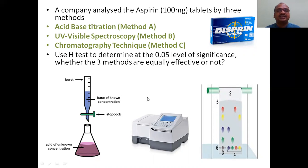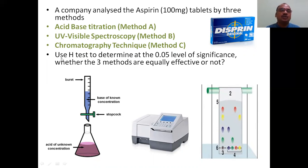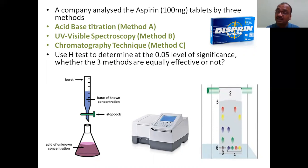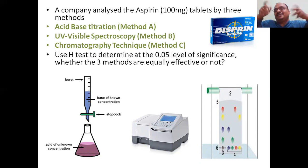Use the H test to determine at the 0.05 level of significance — that is the alpha level. If they are not given, by default it can be taken as 0.05. The question is whether the three methods are equally effective or not. The tablets are the same; the methods are different. Which method gives good results? Either the three are giving the same or different results — that is what they tested.